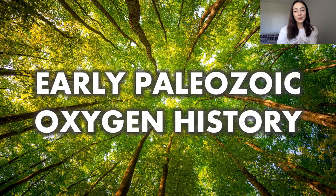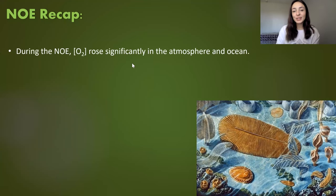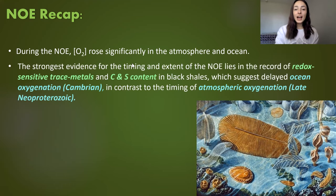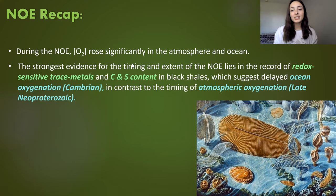Today we're going over the early Paleozoic oxygenation history. To recap the last video on oxidation events, we talked about the NOE, or the Neoproterozoic Oxidation Event, during which oxygen rose significantly in the atmosphere and ocean. The evidence supporting the timing and extent of this event lies in a record of redox-sensitive trace elements and carbon and sulfur content in black shales.